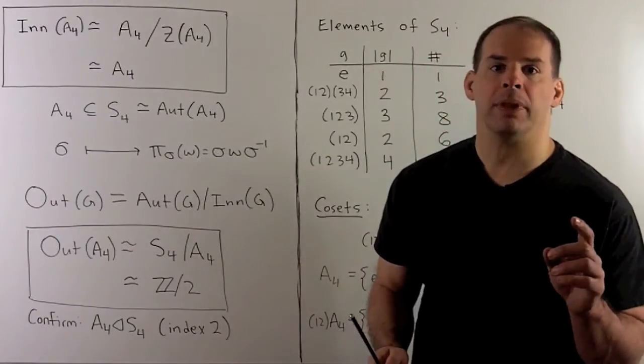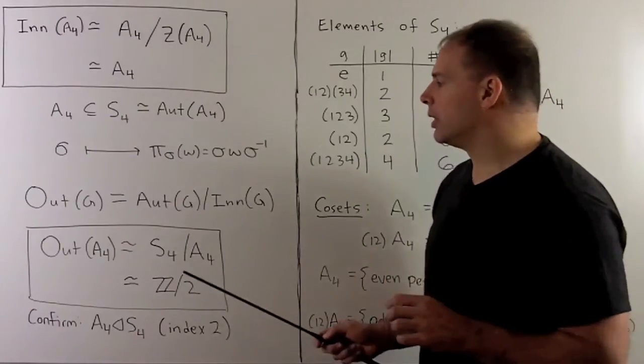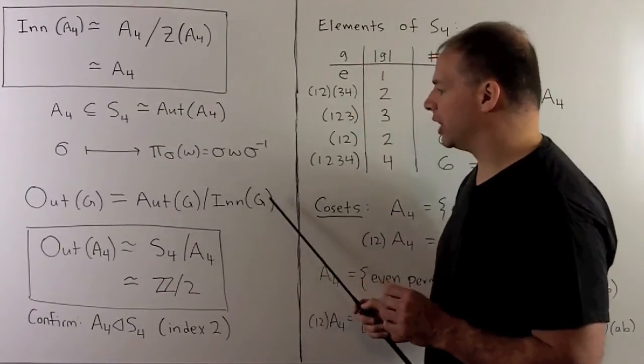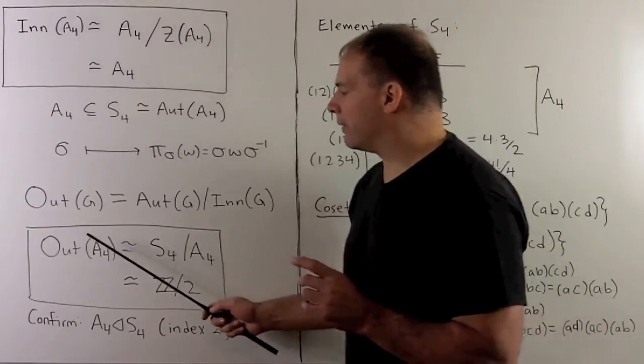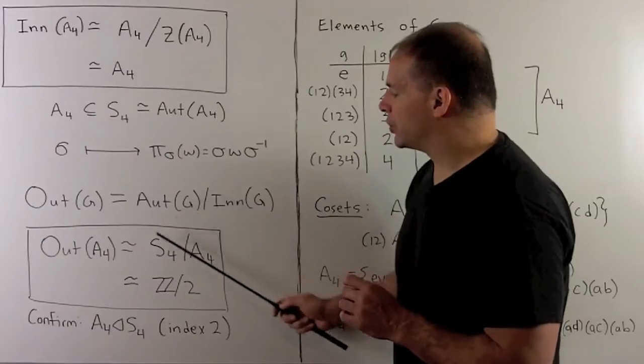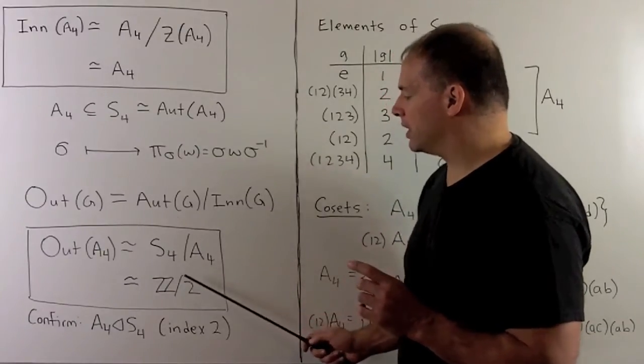How about Out(A4)? Out(G) is defined as the quotient group Aut(G) mod Inn(G). Out(A4) will be isomorphic to S4 mod A4. This has two elements, so isomorphic to Z mod 2.